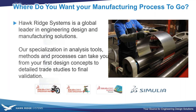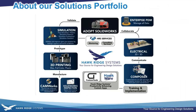My name is Damon Tordini, product manager for flow simulation and plastics, and with me is Tim Milo, product manager for Simulia Abacus. This is going to be an overview of simulating various manufacturing processes with the tools and services we offer from Hawkridge Systems. Hawkridge Systems is a provider of engineering design and manufacturing solutions, and among those are analysis tools meant to be used as part of the design process.